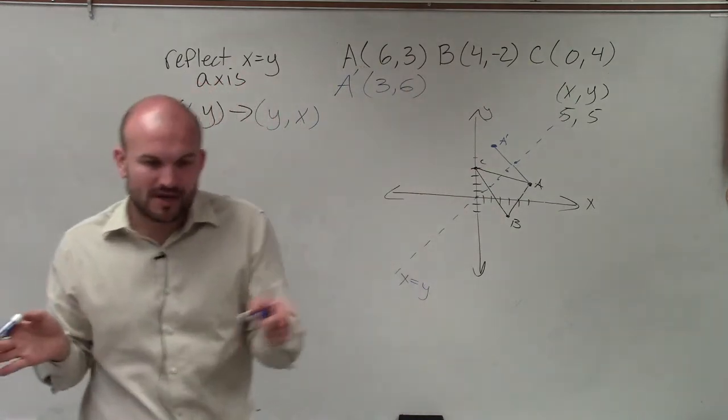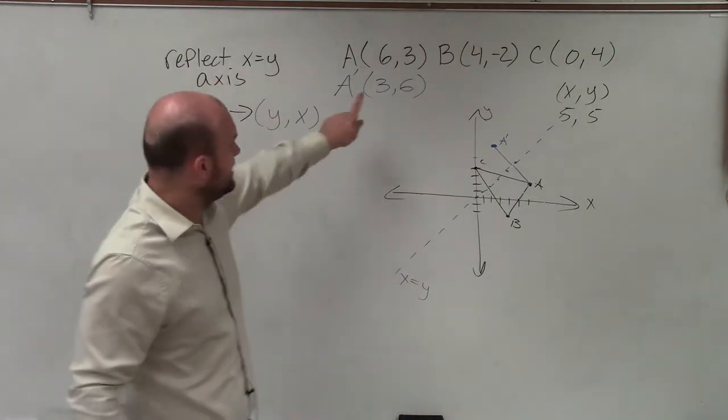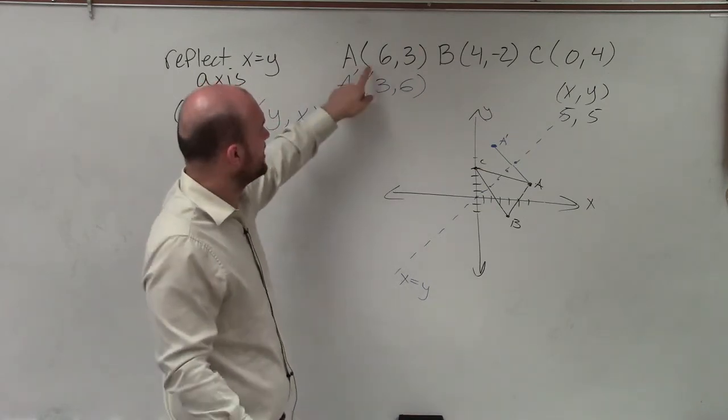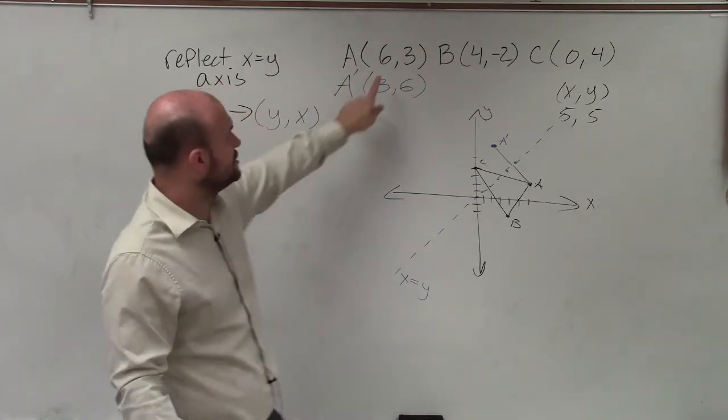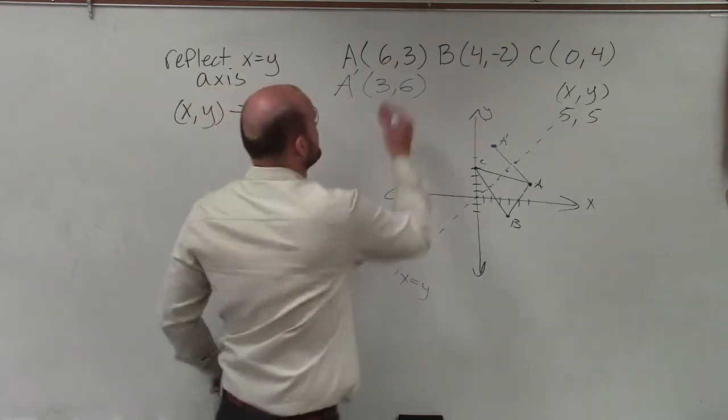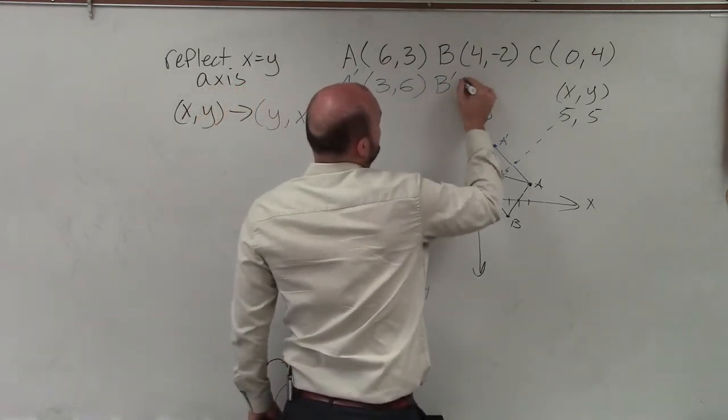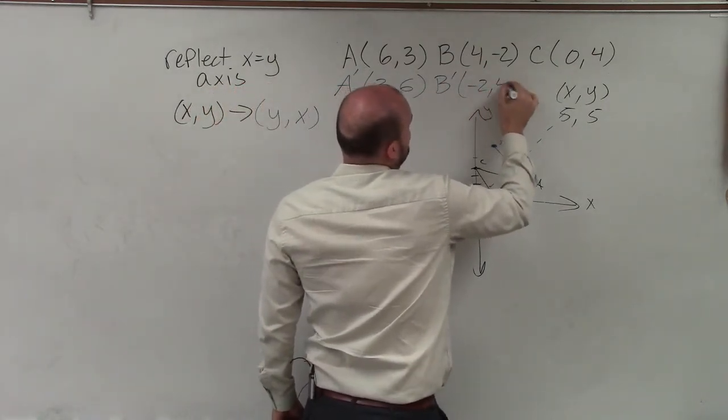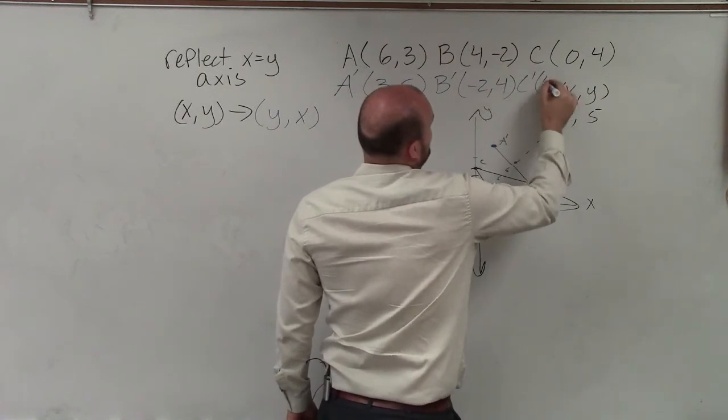So therefore, if here's my pre-image, my new image, is even though they're still going to be x and y's, I'm just going to swap them. So now it's going to be 3 comma 6. So you just take your x and y coordinates and swap them. Now, again, you're still going to graph this as that's the x coordinate, that's the y coordinate. But I use this notation to show you that you're just swapping the coordinates. So therefore, B prime is going to be negative 2, 4, and C prime is 4 comma 0.